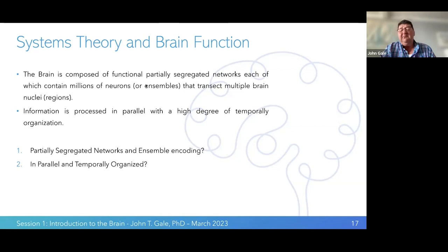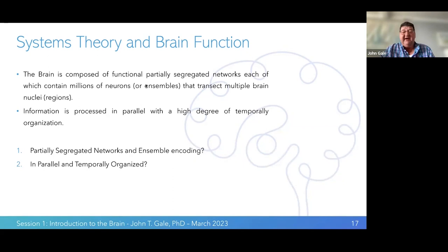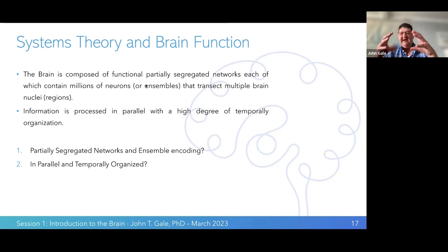The brain is now being described as functionally parallel segregated networks. The networks are partially separated — motor is separated from cognition, which is separated from visual processing — but with a very similar organization. We tend to think of these as loops, and these segregated loops do cross information. This organization allows the brain to be highly parallel — it's able to do multiple things at a time in different parts, and the timing makes it appear like a single process. For instance, if I show you a blue block, one part of the brain encodes the shape and another encodes the color, yet we don't see them separately — we see it as a blue block. That's what we mean by parallel organization.